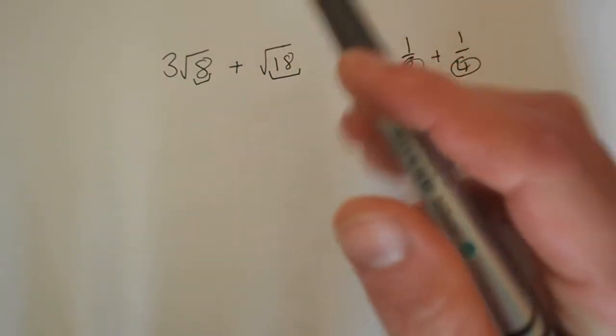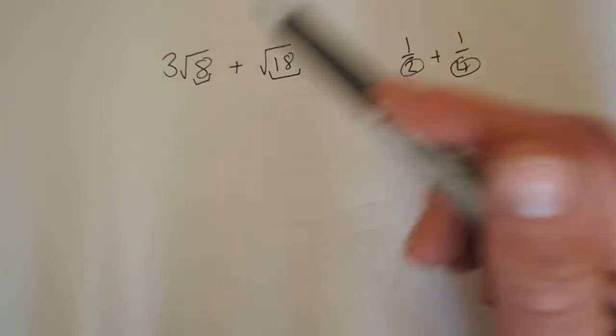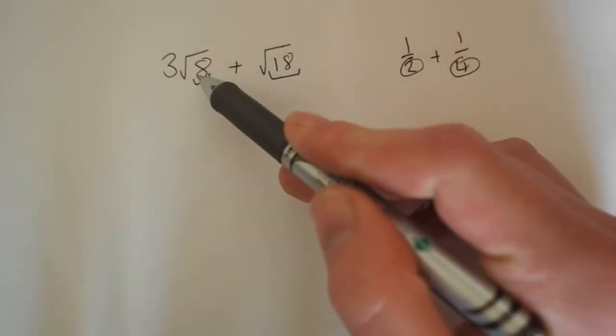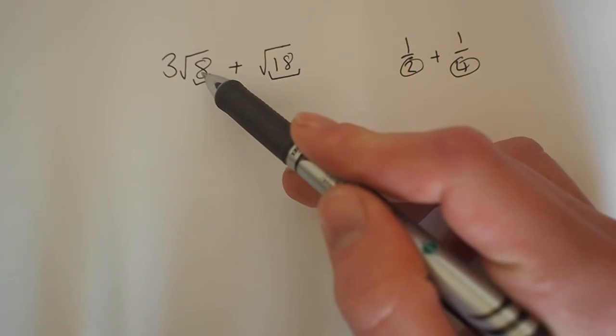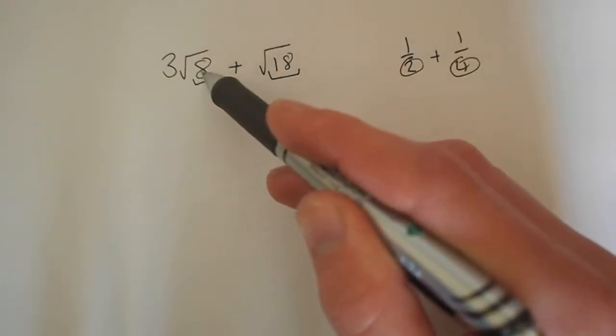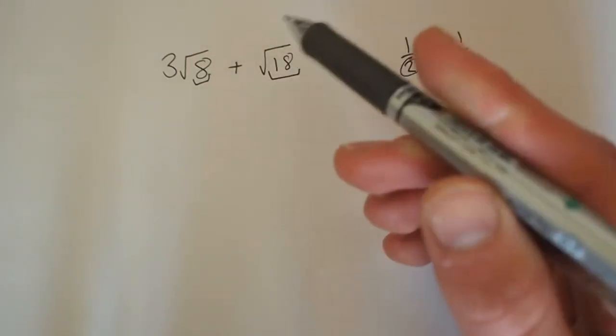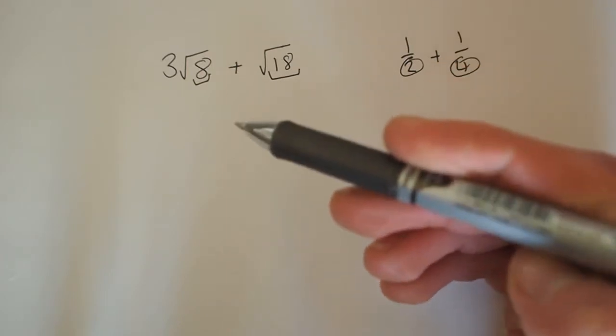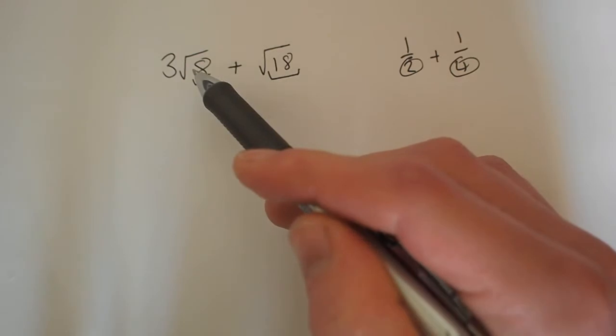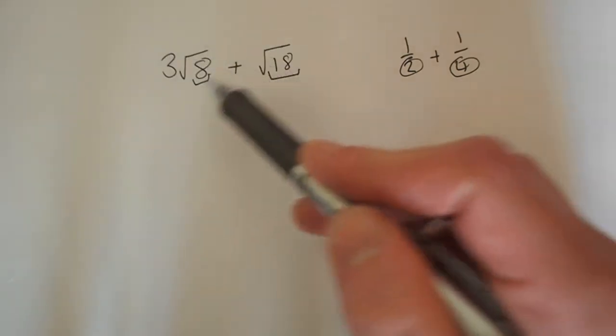So, first what we have to do is find some factors which both the 8 and the 18 have. We've got 2, well the simplest one we've got is 2 really. The 2 can be multiplied into the 8 and multiplied into the 18. So what that suggests is that we're going to have to manipulate the surd here so that we have a square root of 2 multiplied by something else.